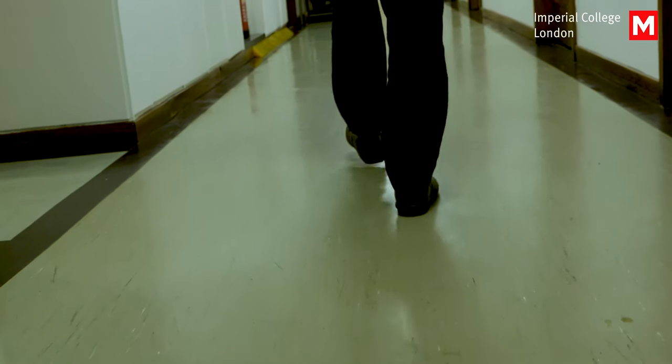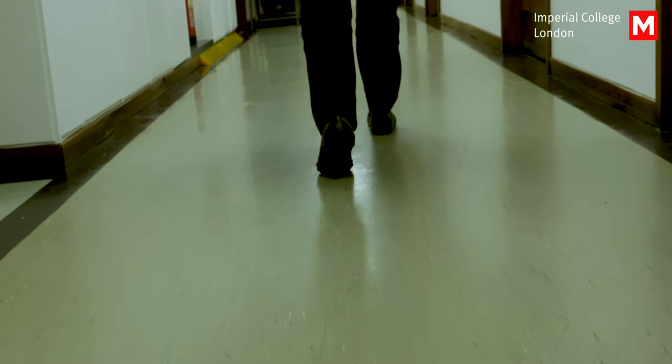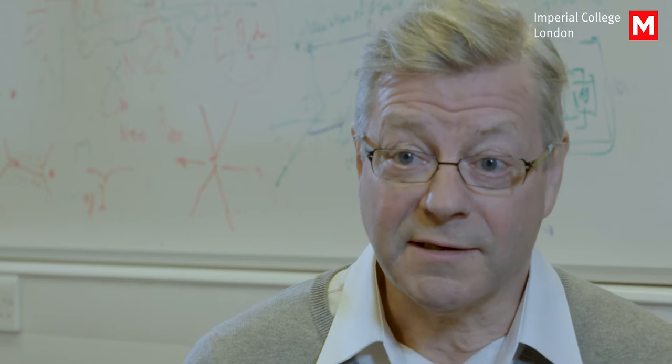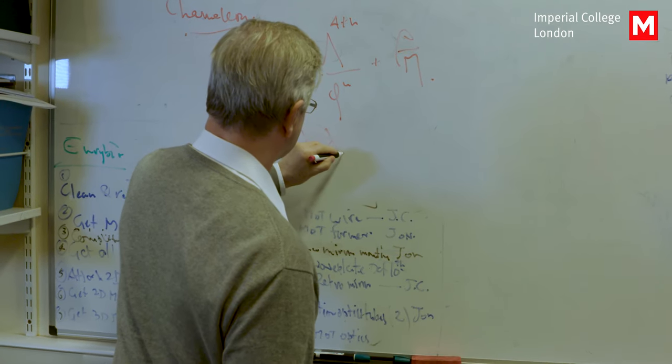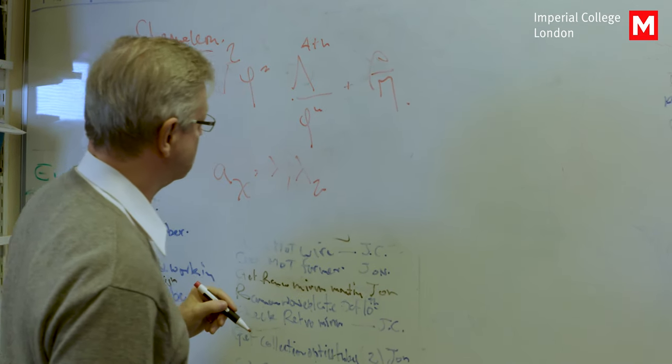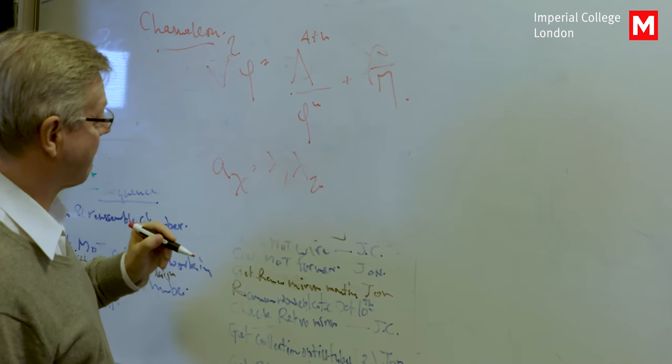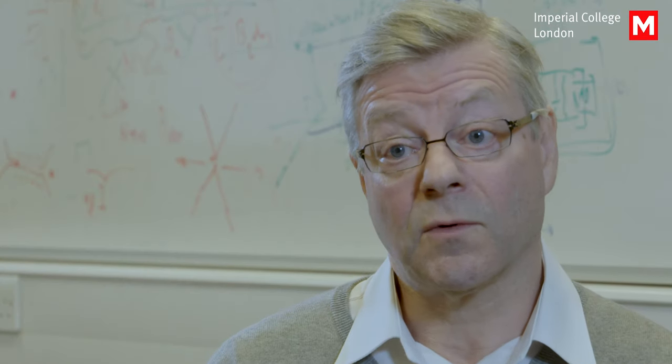An accelerometer measures how quickly the speed of a vehicle is changing in time. And if you know that, then by some simple mathematics you can work out what the position of the vehicle is. The idea of navigating using an accelerometer is actually a pretty old one, but it has the difficulty that you need an extremely precise and reliable accelerometer. If you don't want to make an error, and the longer you go, the more the error compounds. So pretty soon you don't have a clue where you are.